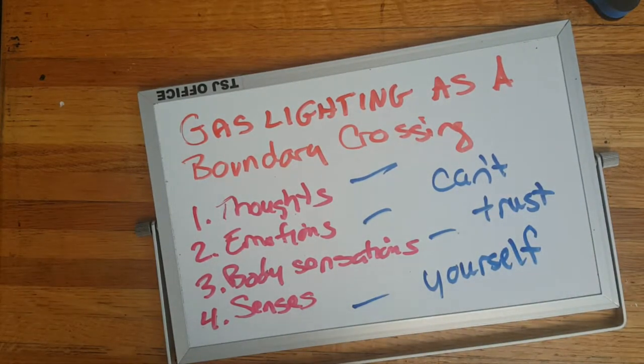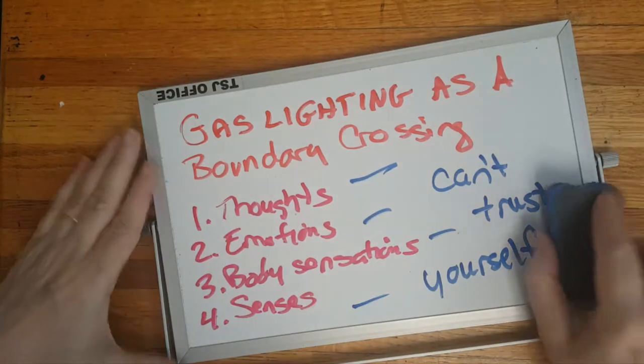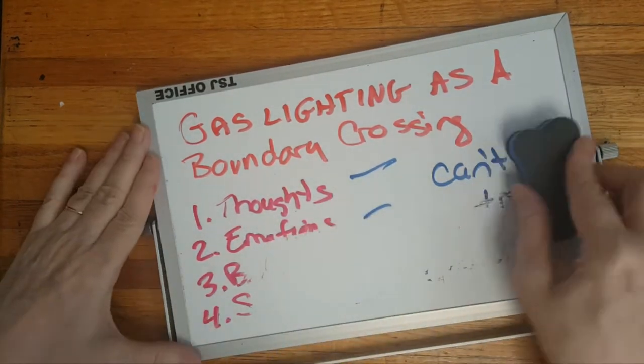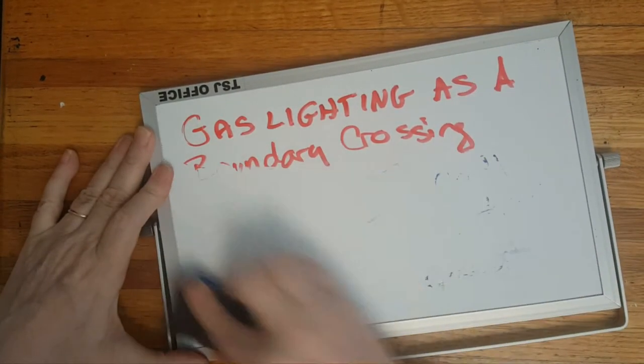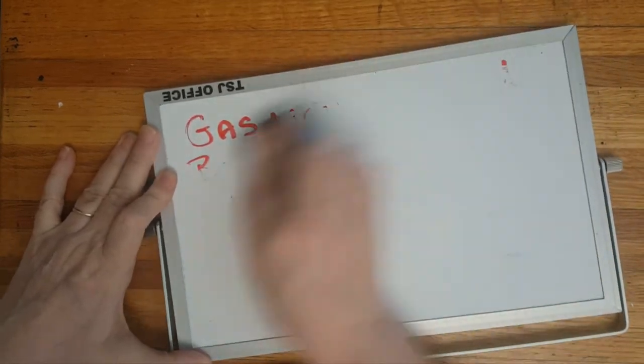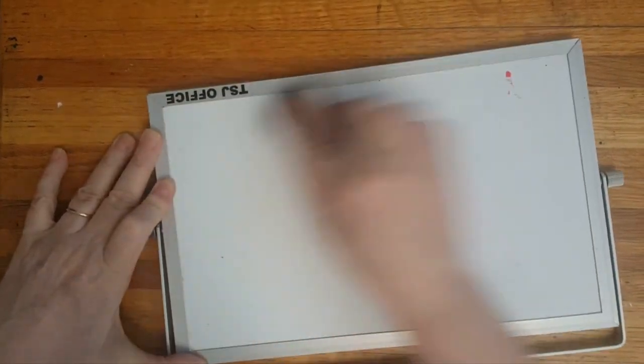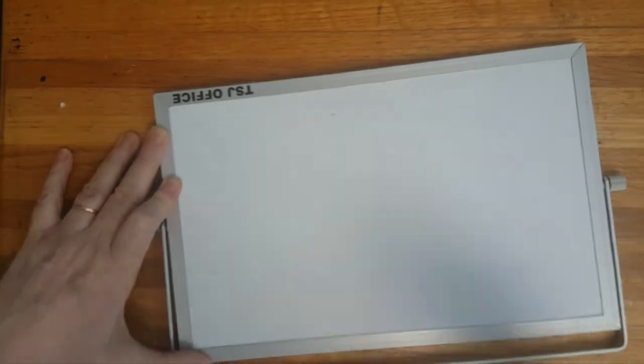As this is always used to control a person, gaslighting is always some form of boundary crossing. But I want to spend a moment before we go into each form of gaslighting that I've drawn up today and go over the four types of boundaries.